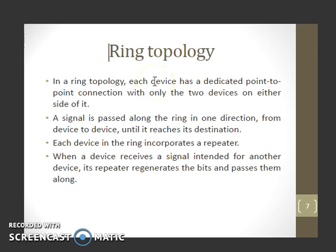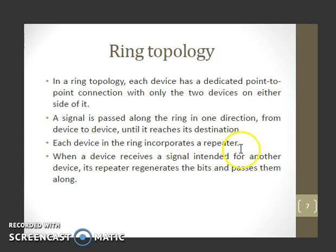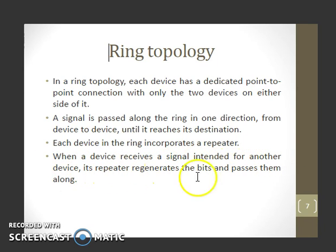Ring topology is the topology in which each device has a dedicated point-to-point connection with only two devices on either side of it. A signal is passed along the ring in one direction from device to device until it reaches its destination. Each device in the ring incorporates a repeater. When a device receives a signal intended for another device, its repeater regenerates the bits and passes them along.